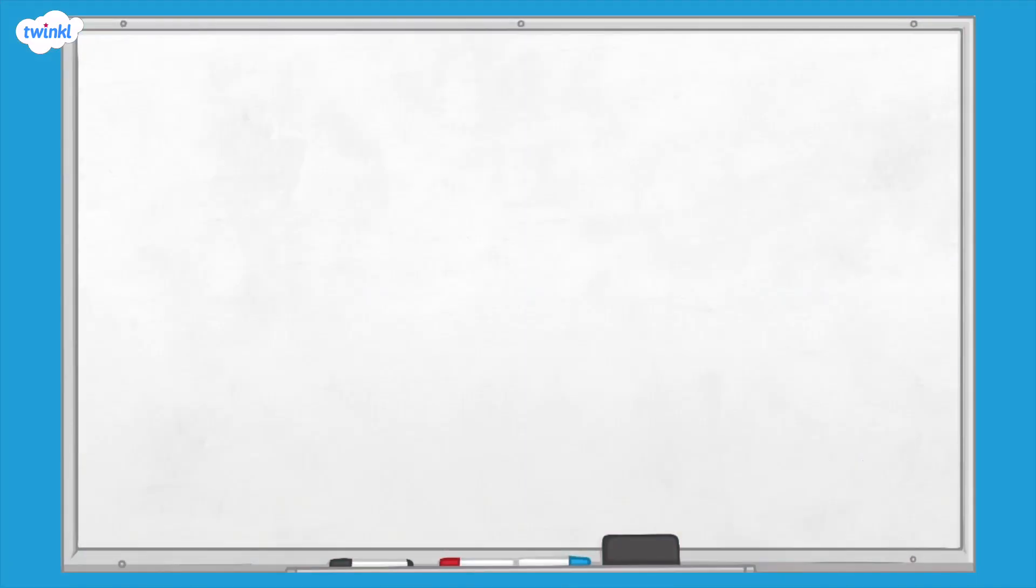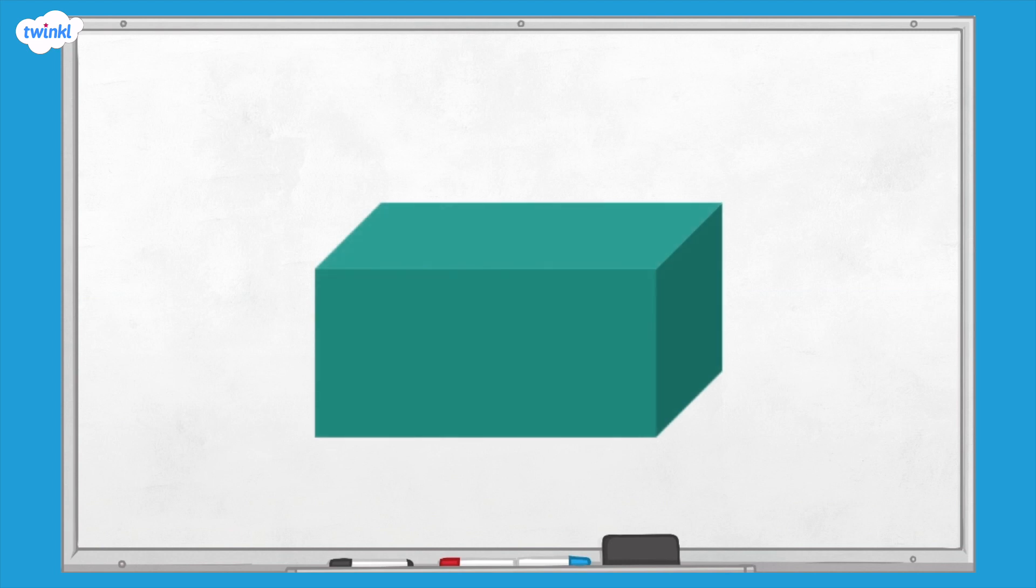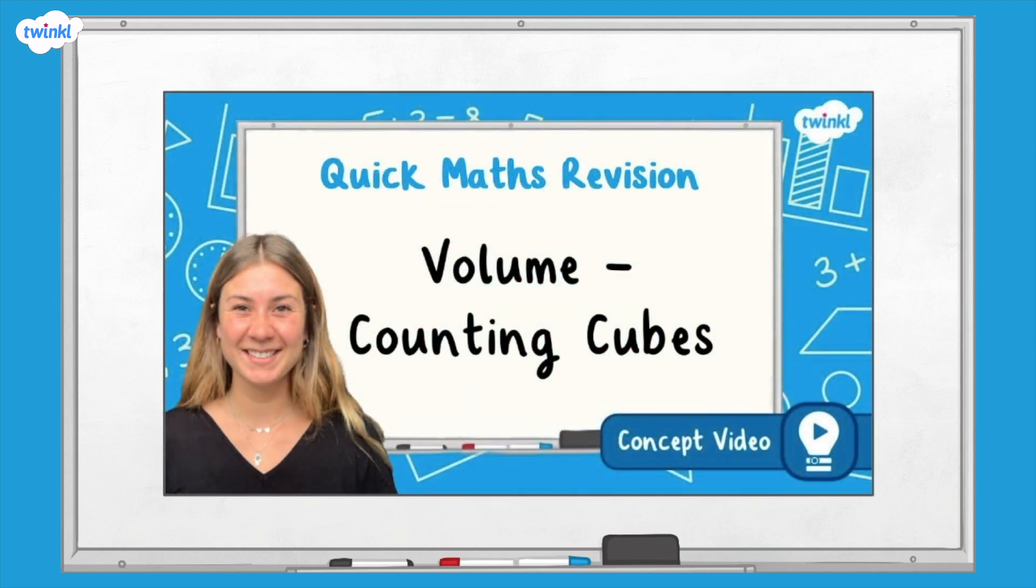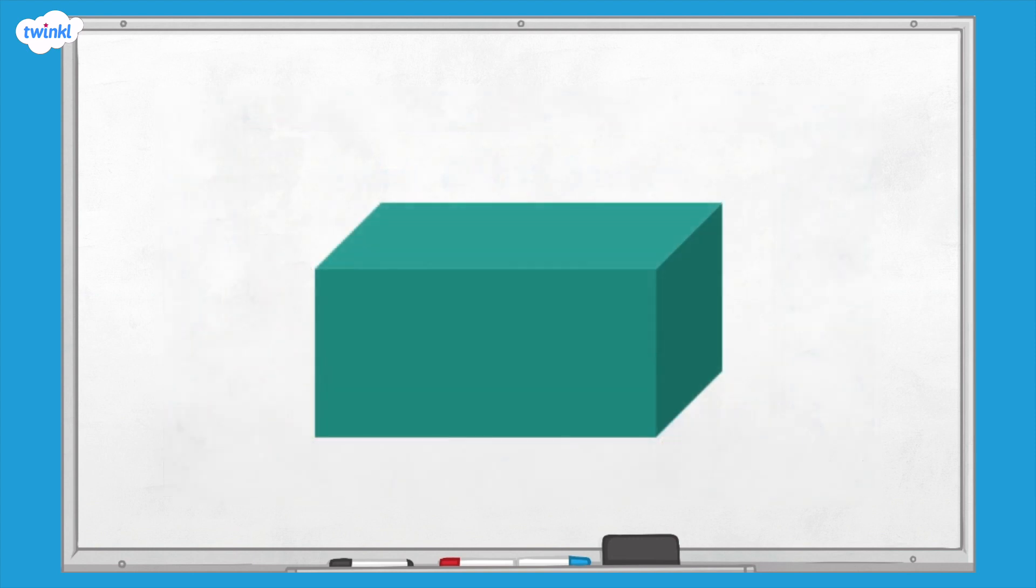A cuboid is a three-dimensional figure with six rectangular faces. One way we can calculate the volume of a cuboid is to count the number of cubic units within the cuboid. If you'd like to find out more about calculating volume by counting cubes, you can check out our video on the Twinkl website.